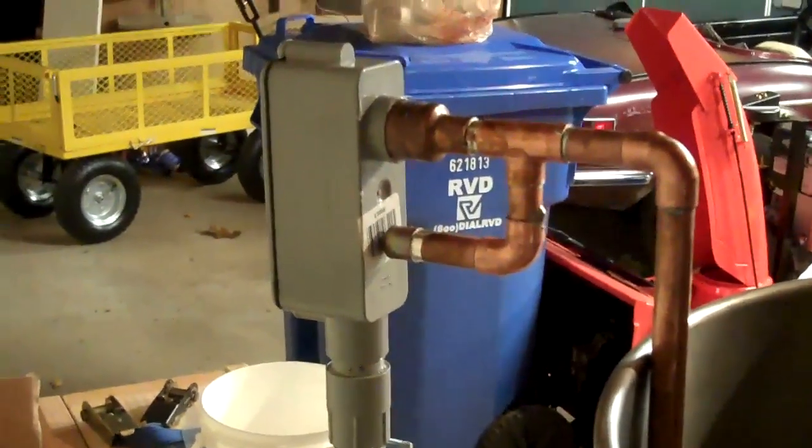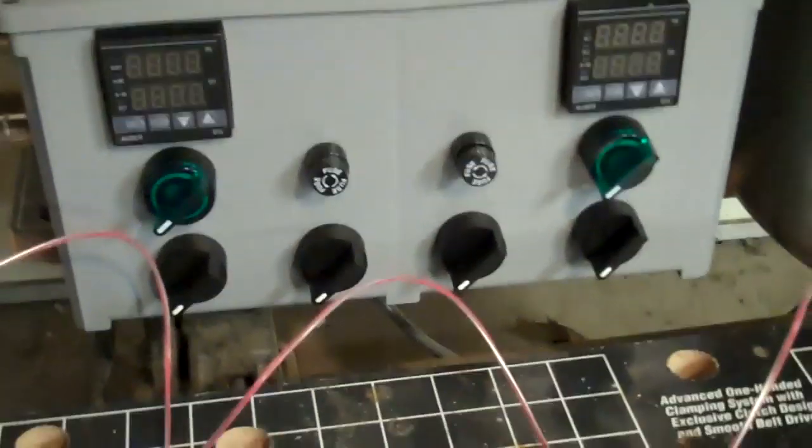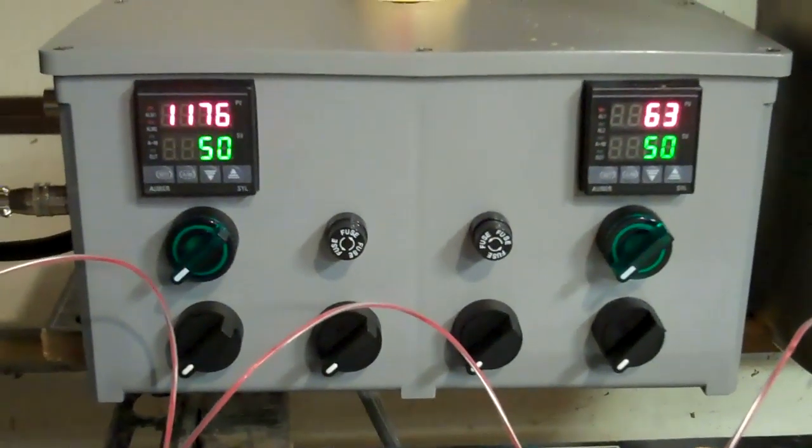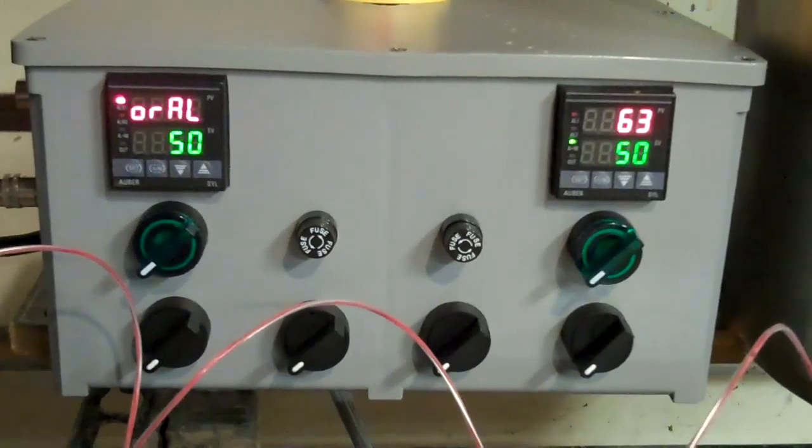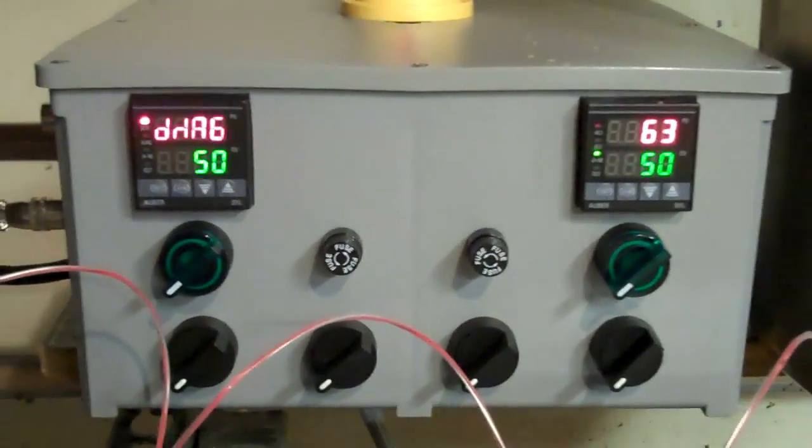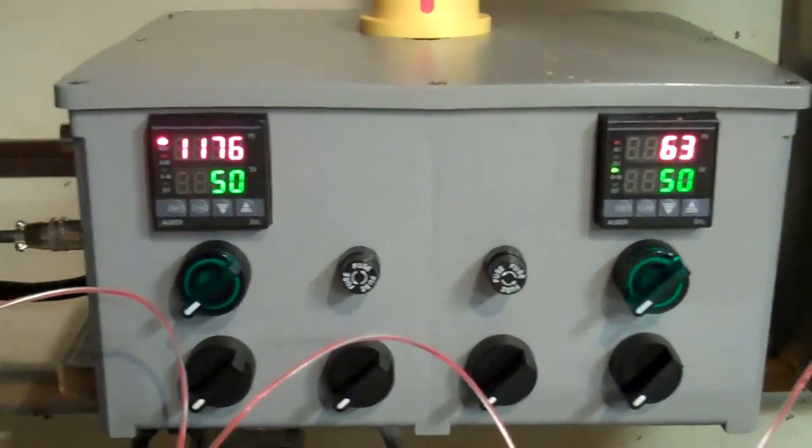That's the power box for the heat stick and the front of the panel which we'll turn on now. So you can see the PID for the hot liquor tank is freaking out because there's no RTD connected.